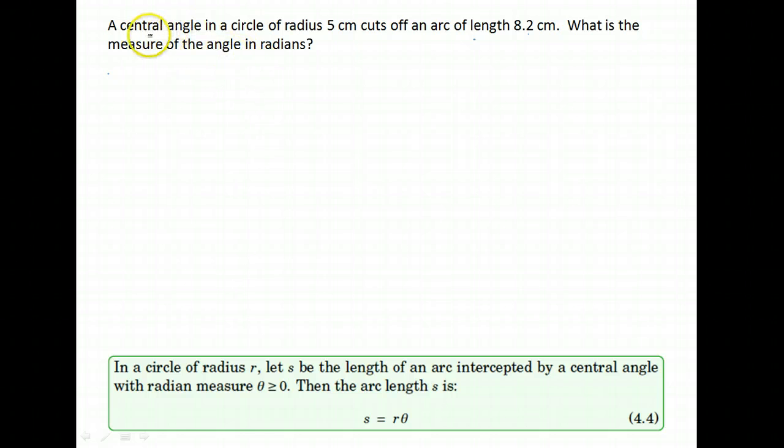So here you might see some familiar things. We see we have a central angle. We know a radius of our circle is 5. We see arc length here is 8.2. We want to know the measure of the angle in radians.